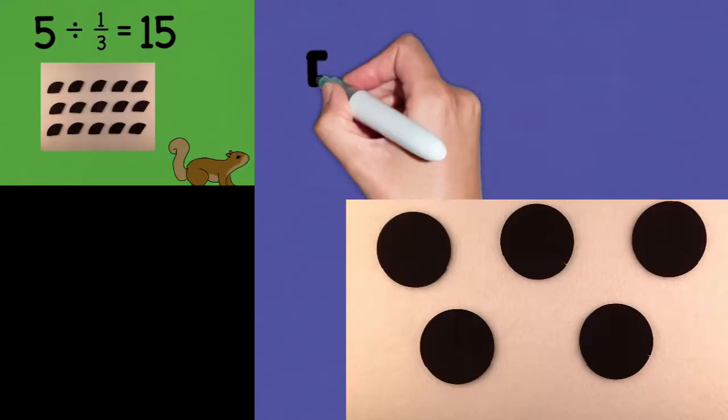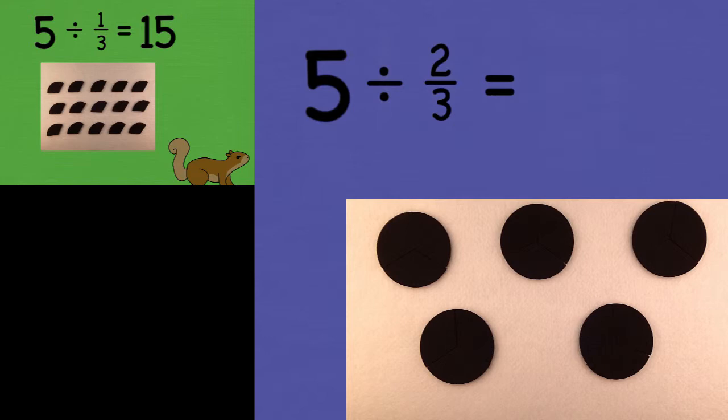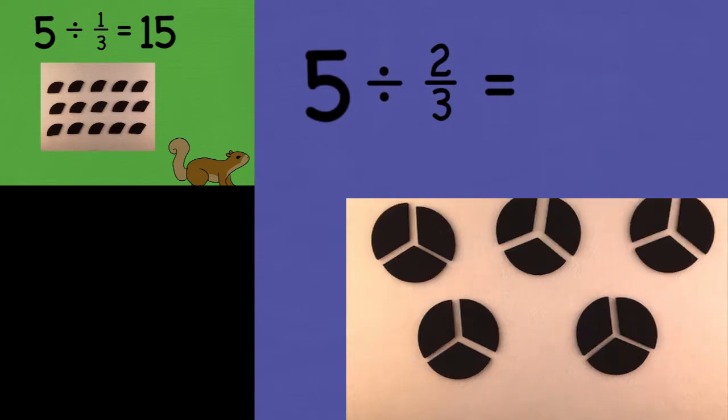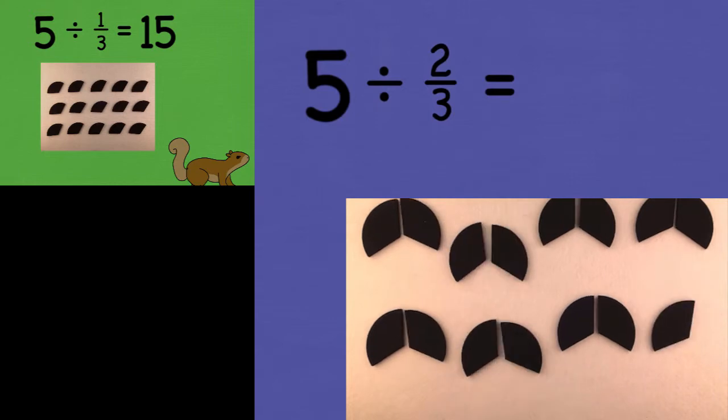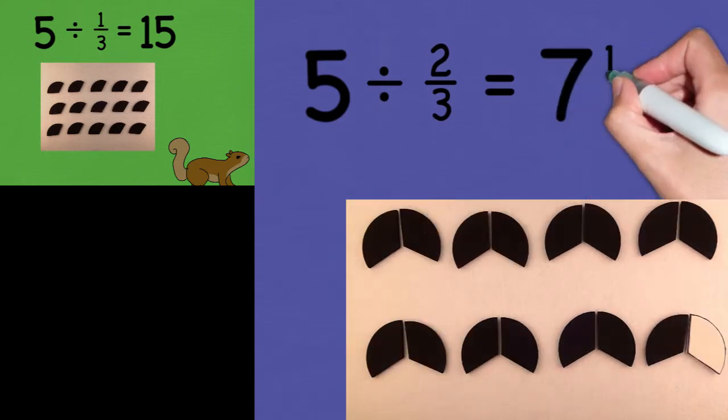What if I change the problem to 5 divided by 2 thirds? Well, I would treat it the same way. I would divide 5 into thirds and put 2 thirds in each pile, giving me 7 and a half piles.